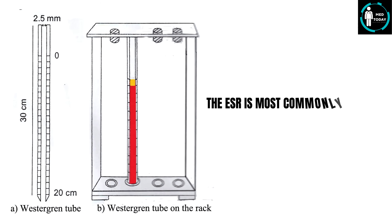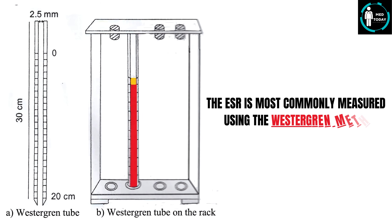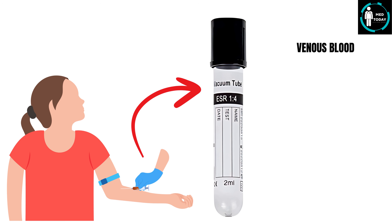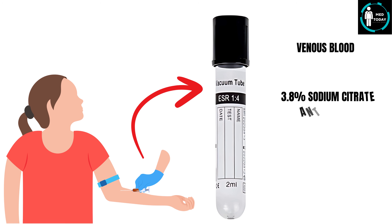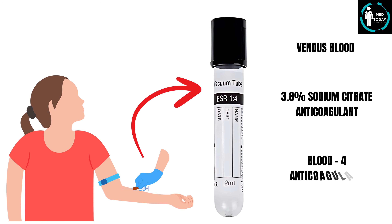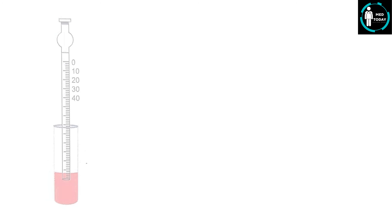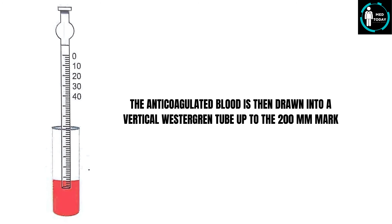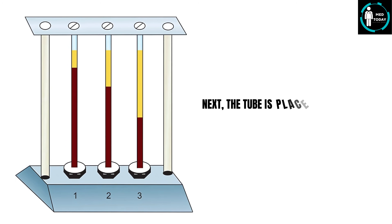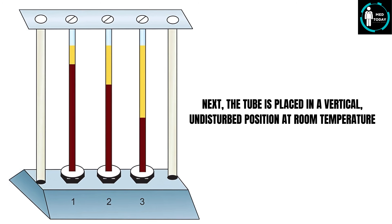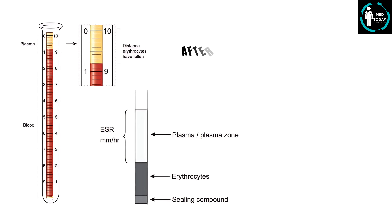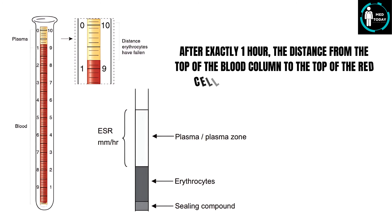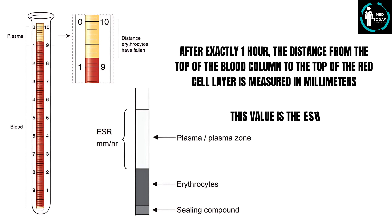The ESR is most commonly measured using the Westergren method, which is considered the standard procedure. In this method, venous blood is collected into a tube containing 3.8% sodium citrate anticoagulant in a 4 to 1 blood to anticoagulant ratio. The anticoagulated blood is then drawn into a vertical Westergren tube up to the 200 mm mark. The tube is placed in a vertical, undisturbed position at room temperature. After exactly one hour, the distance from the top of the blood column to the top of the red cell layer is measured in millimeters. This value is the ESR.